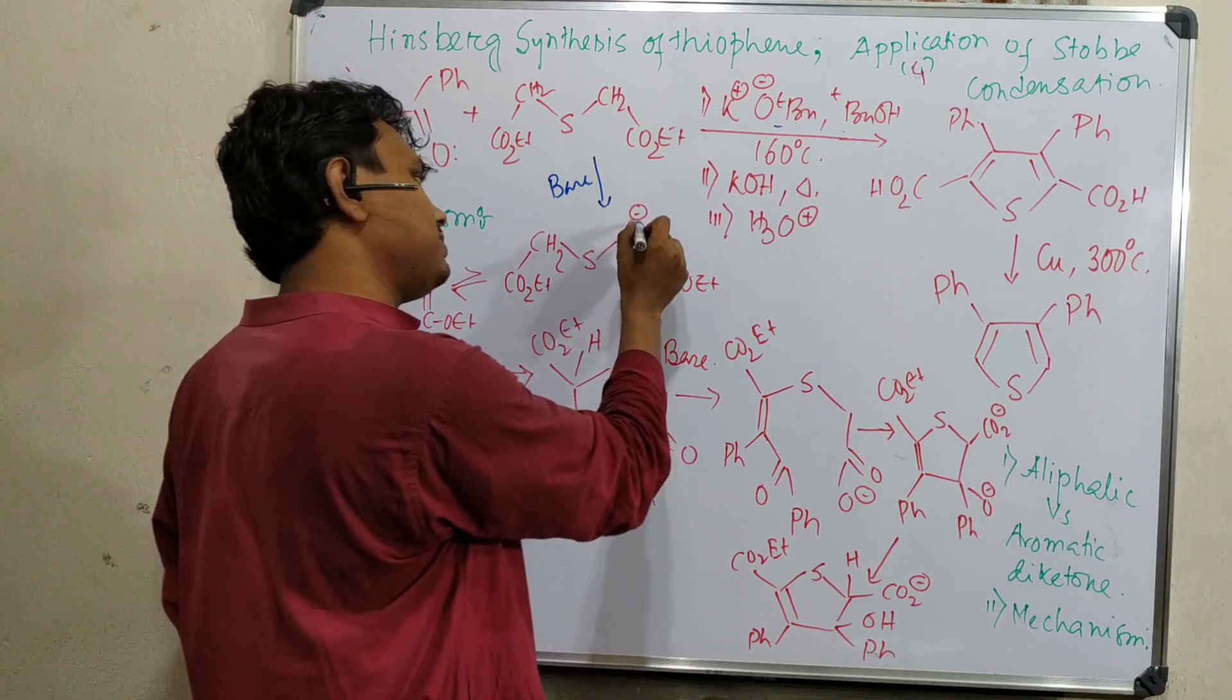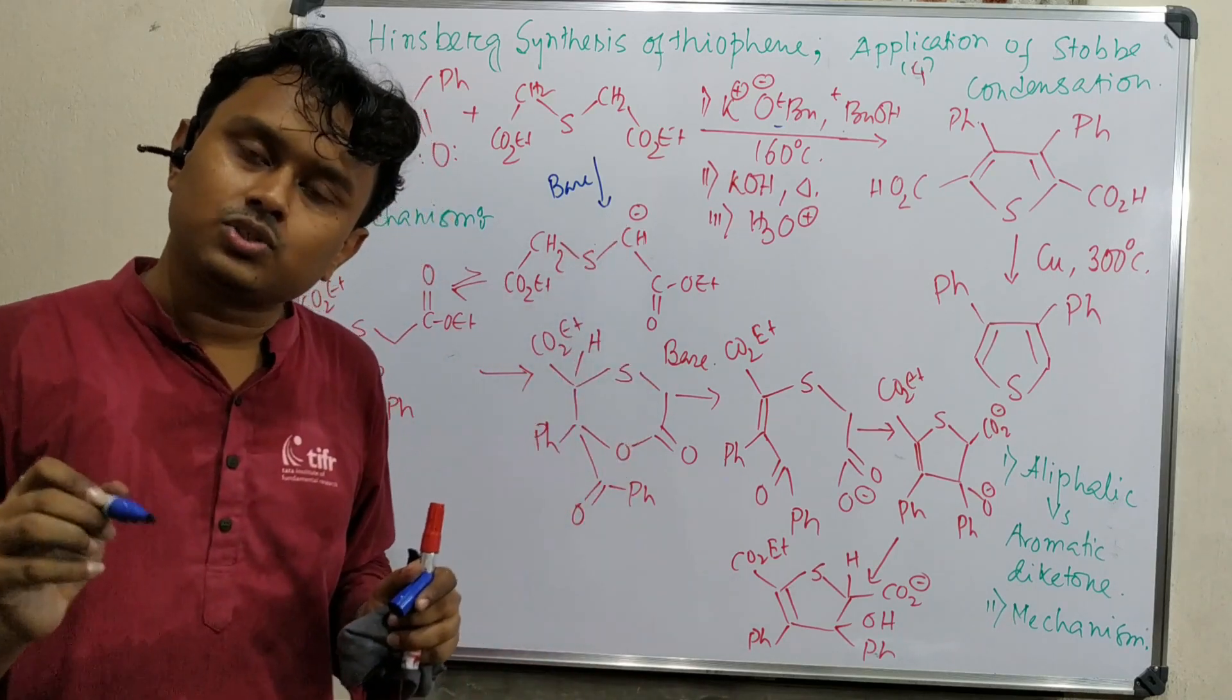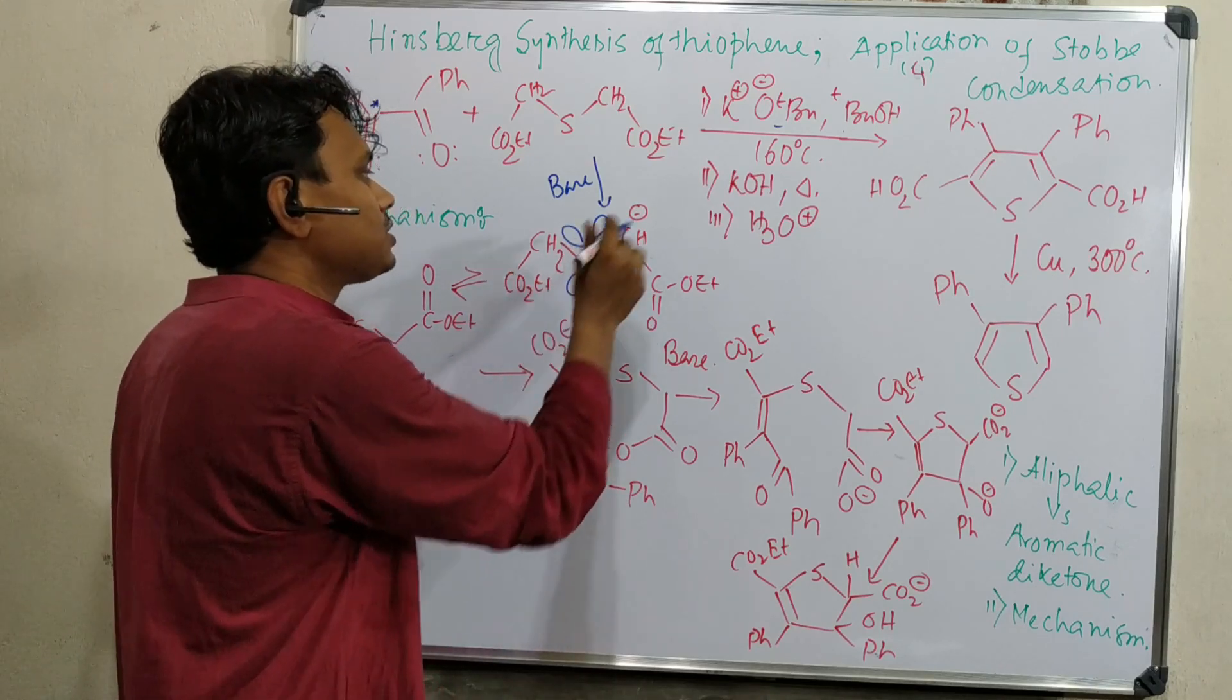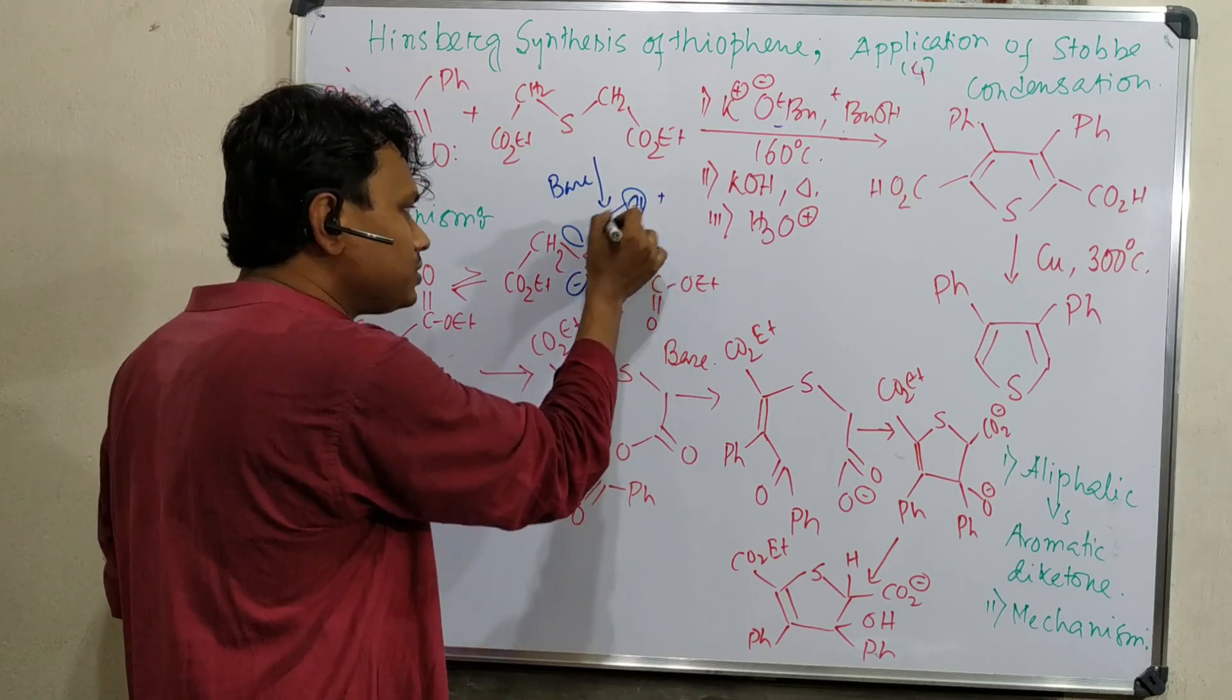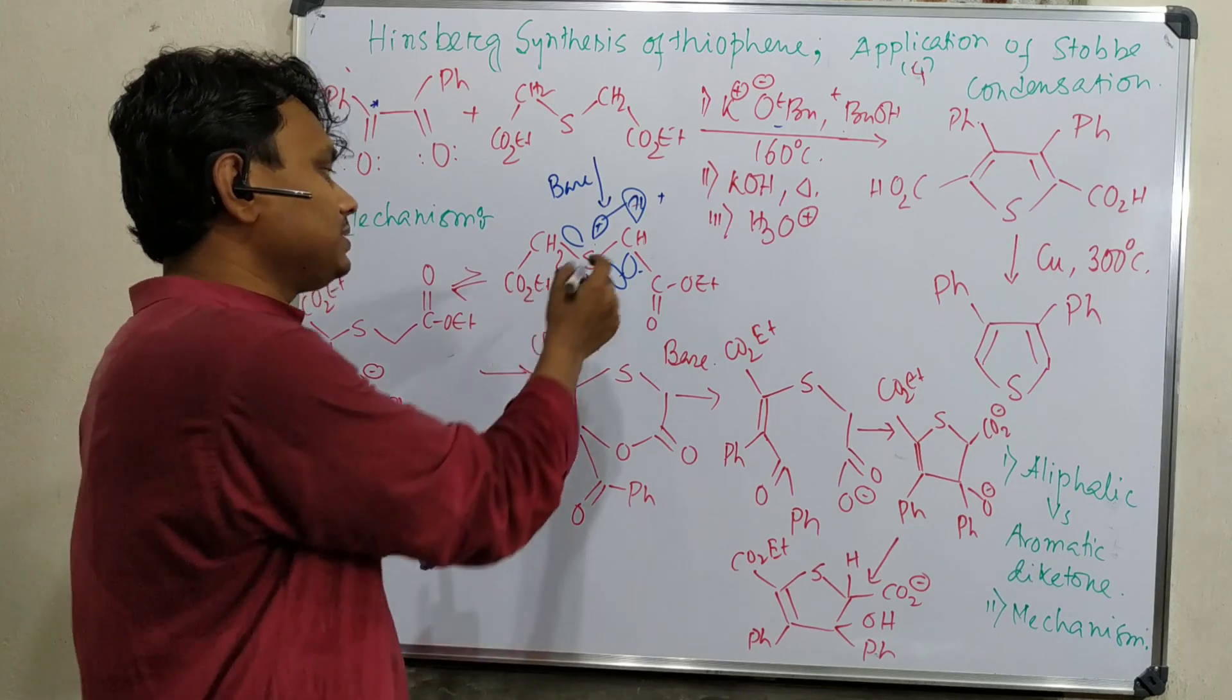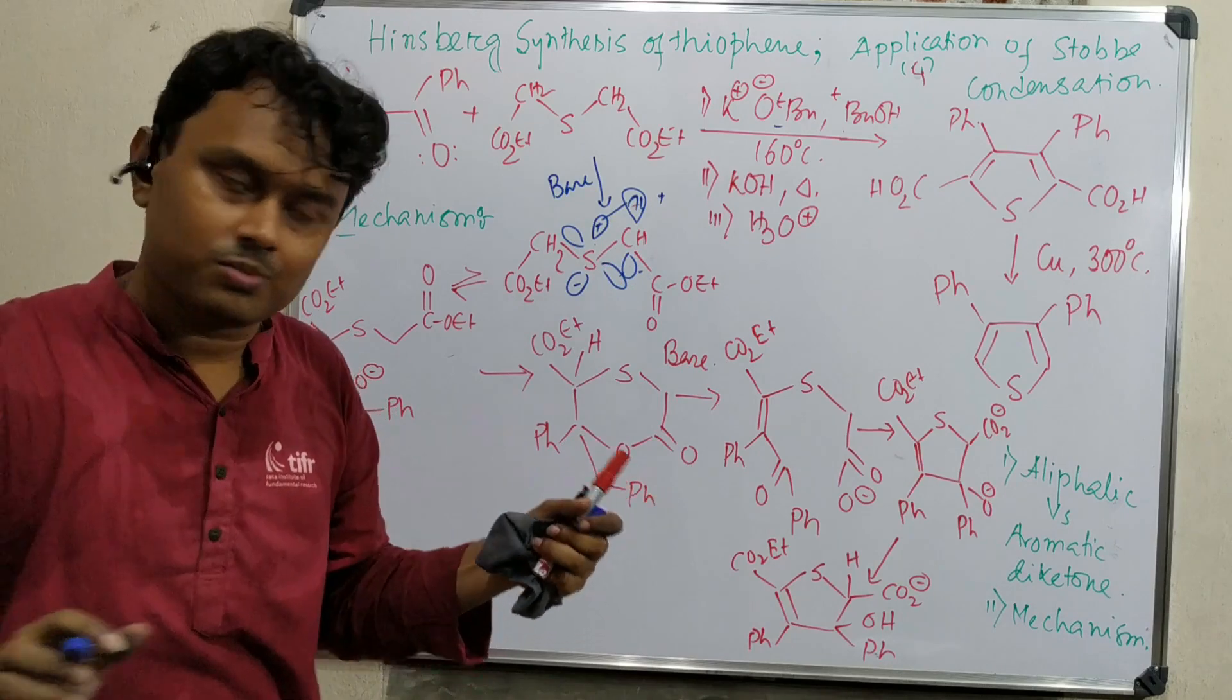This carbanion is resonance stabilized using the carbonyl group of the ester, as we have discussed in Stobbe condensation. But along with that, there is an additional advantage because there is sulfur. It has a minus-I effect, so it can stabilize the charge a little bit. But in addition to that, sulfur has energetically accessible vacant d-orbitals that can stabilize the negative charge using conjugation. This is possible only in case of sulfur.